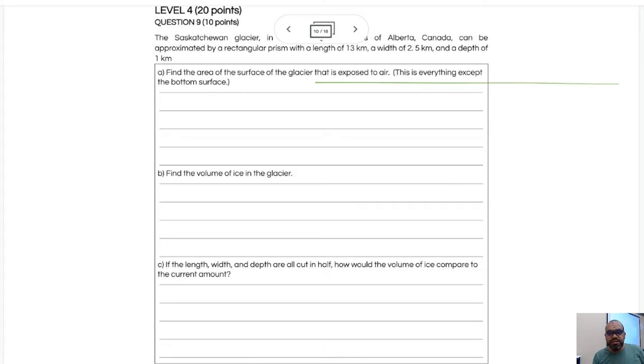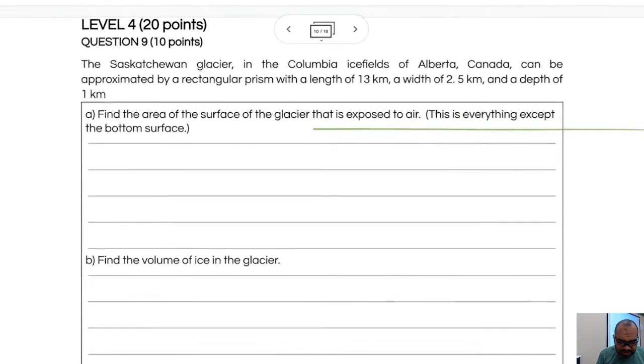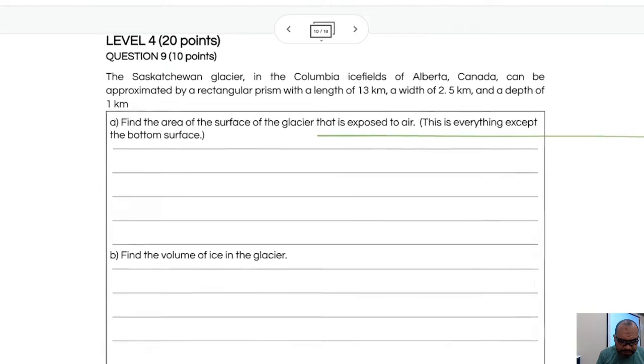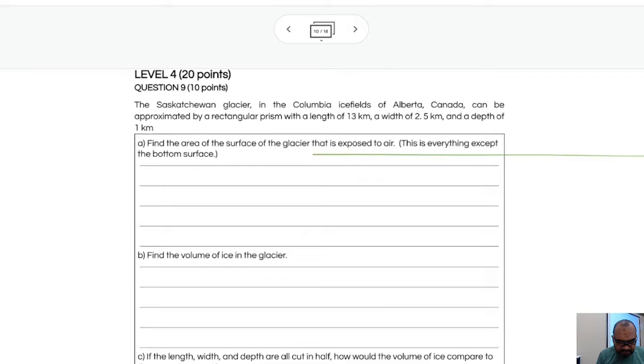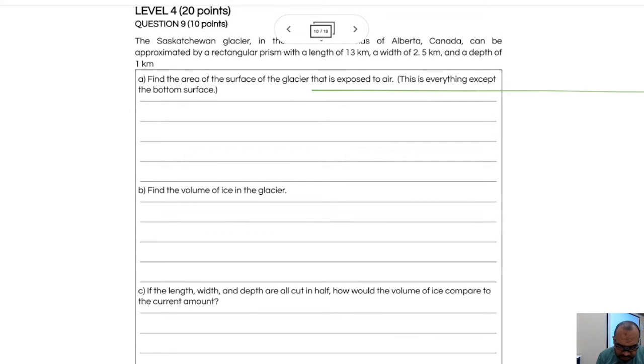Okay sixth graders, let's solve this one level four right now. Attention here for what is asking for. The Saskatchewan Glacier in Columbia Icefields of Alberta, Canada can be approximated by a rectangular prism with a length of 13 kilometers, the width of 2.5 kilometers, and the depth of one kilometer.